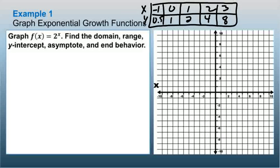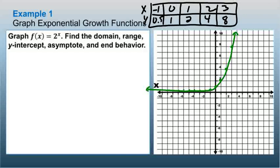Now if I plot these on the coordinate plane, counting by 1s: negative 1 gives 0.5, 0 gives 1, 1 gives 2, 2 gives 4, and 3 gives 8. If I go to negative 2, that's 2 to the negative 2nd power which is 1/4 — meaning the graph gets smaller and smaller, closer and closer to the x-axis but never crosses it, because there's nothing I can raise 2 to in order to get 0.